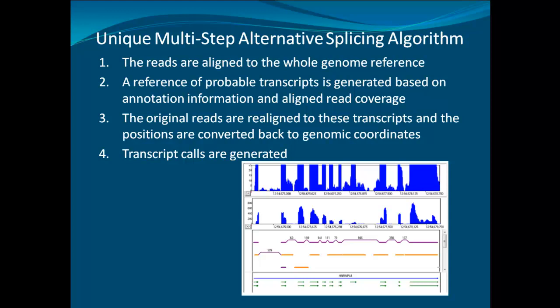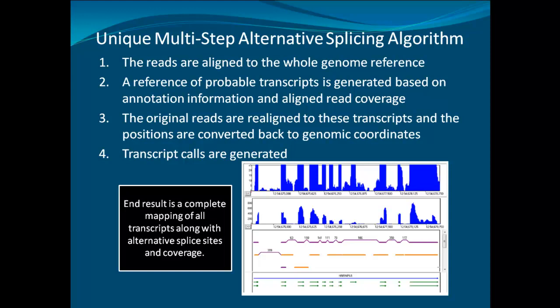There are four steps to the NextGene Alternative Splicing algorithm. First, the reads are aligned to the whole genome reference. Then, a reference of probable transcripts is generated based on annotation information and aligned read coverage. The original reads are then realigned to these transcripts, and the positions are converted back to genomic coordinates. Finally, transcript calls are generated. The results will be displayed in the transcript view, along with the coverage and orange links to indicate alternative splice exons.